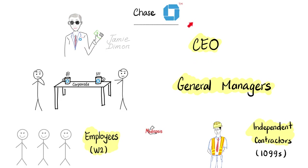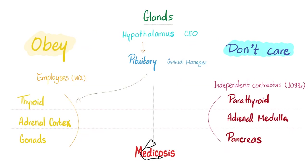We have a CEO, general manager, employees, and independent contractors — only the employees listen to the general manager. The adrenal cortex is one of the employees. However, the adrenal medulla is one of the independent contractors. The pituitary can give orders to the adrenal cortex, but there is no relationship whatsoever between the pituitary and the adrenal medulla.